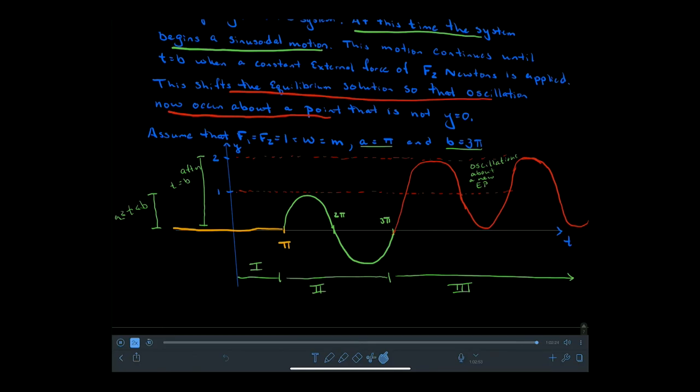The Dirac function acts like a pulse of energy to the system: it can take a system that's not moving and bring it into motion, almost as if you gave it an instantaneous initial velocity at that point. The step function allows different forces to be applied at different times — in this case, it changes the equilibrium point about which everything oscillates, shifting it downward by one unit.